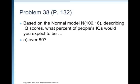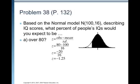Let's consider problem 38 on page 132. Based on the normal model with mean of 100, standard deviation of 16, describing IQ scores, what percent of people's IQ scores would you expect to be over 80? So, Y greater than 80. We're going to go from Y to Z. So, Z is equal to observation, our Y value, minus the mean over the standard deviation. So, we have 80 minus 100 over 16. Negative 20 over 16 is negative 1.25.